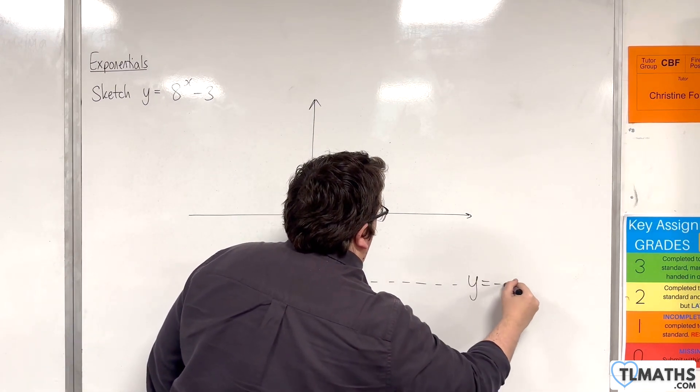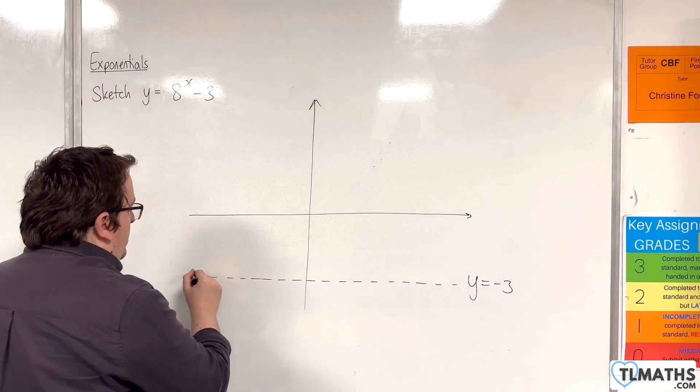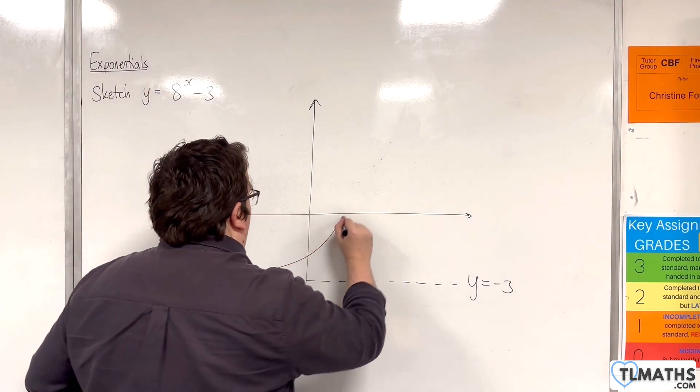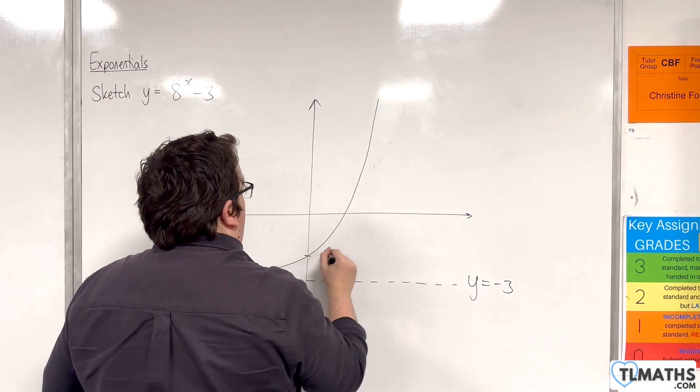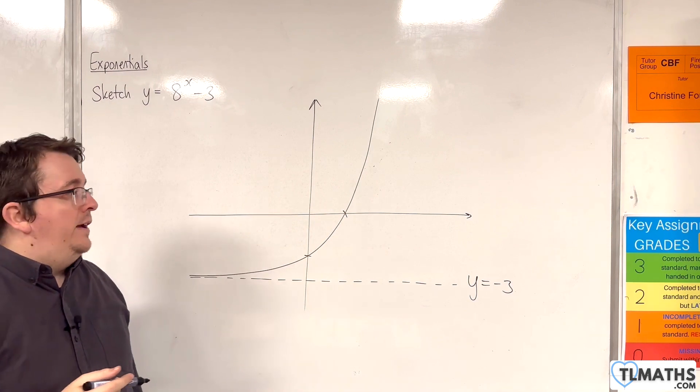So y = -3, that's my horizontal asymptote. Now, the curve is going to look something like this. And there are two points of interest: where it crosses the y-axis and where it crosses the x-axis.